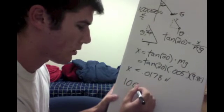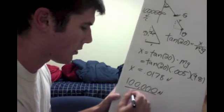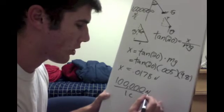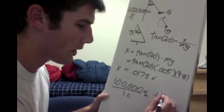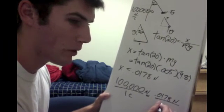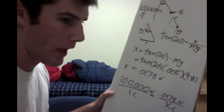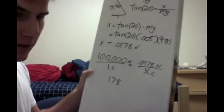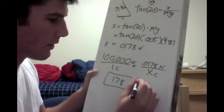So we would have 100,000 newtons of force with one coulomb of charge. So if we want 0.0178 newtons of force, we would need x coulombs of charge. I solved that, and it was 178 nanocoulombs. And that is your final answer.